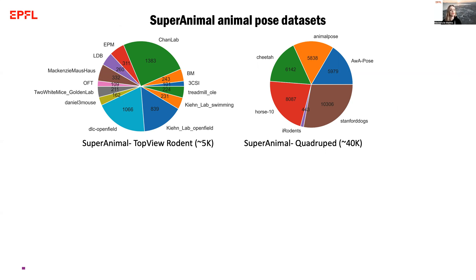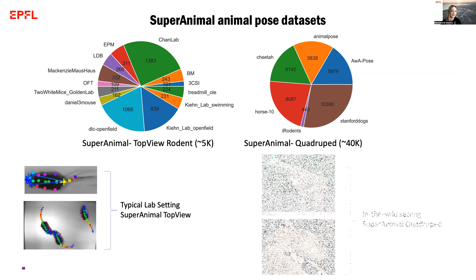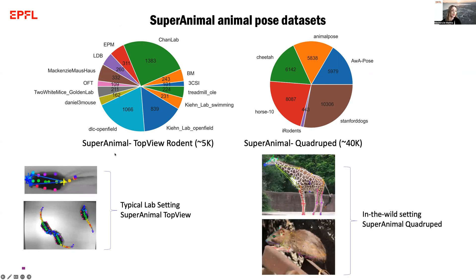We showed on completely held-out datasets that have never been seen during training that we could do zero-shot inference — meaning this data has never been used in a training phase — and get exceptionally good performance. For example, we held out the original DLC open field benchmark and a newly introduced multi-animal dataset. In the quadruped model, even though there are no giraffes in the training data, it could do quite good inference on quadrupeds including rodents, giraffes, and even elephants.